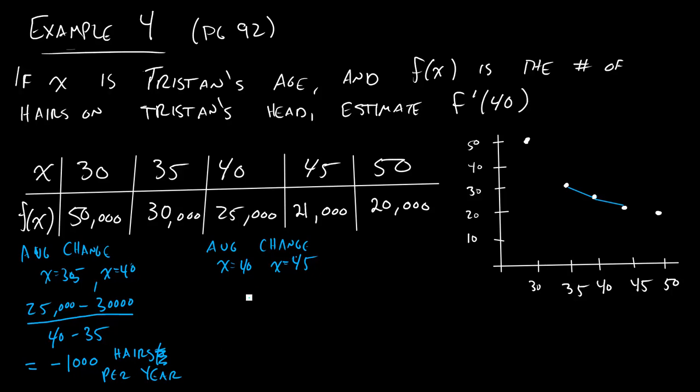Similarly, we can come over here and we can do 21,000 minus 25,000, and we're going to divide that by 45 minus 40. And up here we'll have negative 4,000, down here we'll have 5, and so this is equal to negative 800 hairs per year.